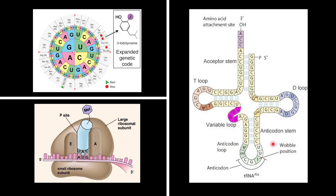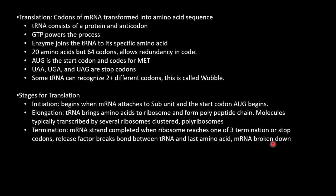Just a few more things we need to cover. So GTP powers the process, and enzymes join the tRNA to its specific amino acids. AUG is the start codon and codes for methionine, while UAA, UGA, and UAG are stop codons. Some tRNA can recognize two plus different codons. This is called wobble.